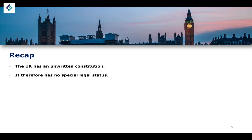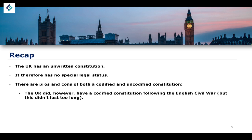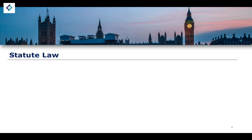There is no special legal status that exists to entrench higher law, like the US Constitution, for example. We noted already that there are pros and cons of codified and uncodified Constitutions. The UK did once have a codified Constitution following the English Civil War, though this didn't last long. It was described as the Commonwealth Constitution under the protectorship of Lord Oliver Cromwell. Because the UK Constitution is uncodified, it has its origins from a number of different sources.